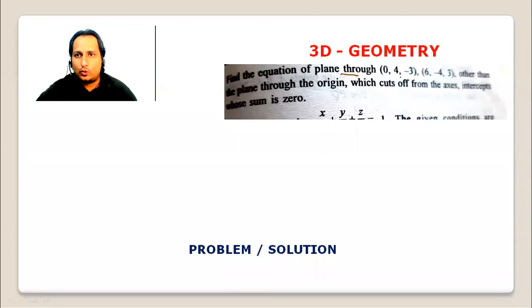Find the equation of plane (2, 0, 4), (-3, 6, -4), (3, ...) other than the plane through the origin. The origin is one possible solution. Formula which cuts off from the x-axis intercept with sum zero. So the plane equation needs to be found given two or three points and intercept with coordinate axis sum is zero.